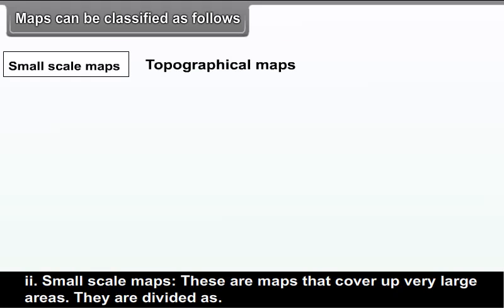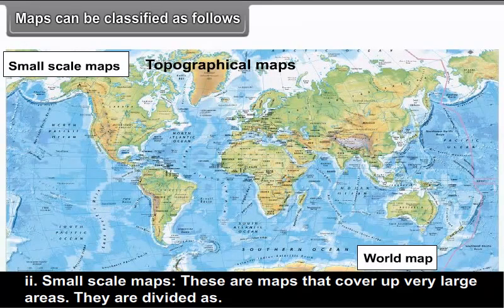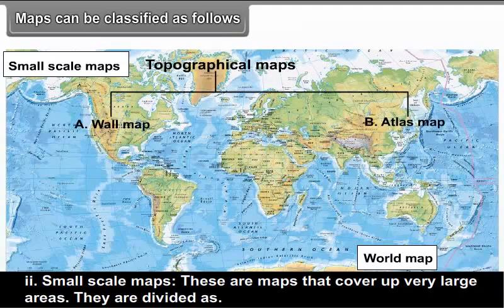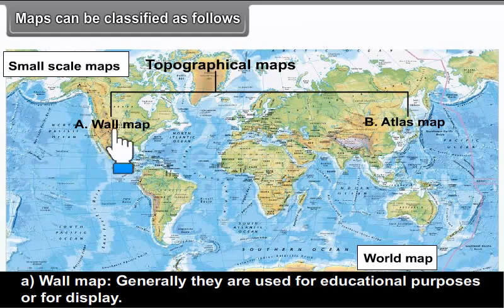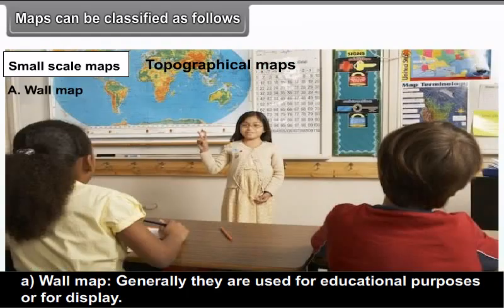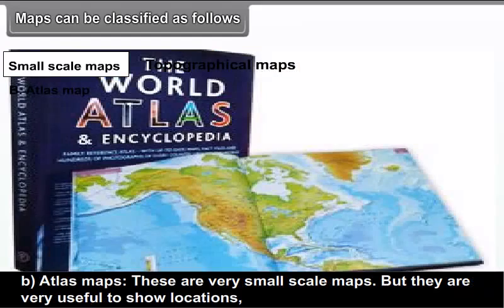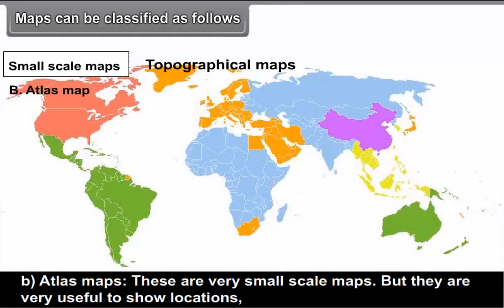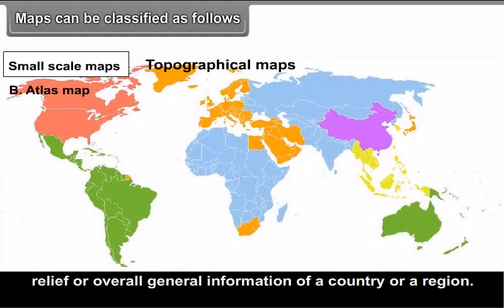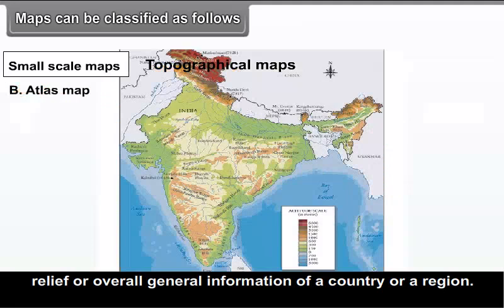Small-scale maps cover large areas and are divided into Wall maps, generally used for educational purposes or display, and Atlas maps, which are very small-scale maps but very useful to show locations, relief, or overall general information of a country or a region.